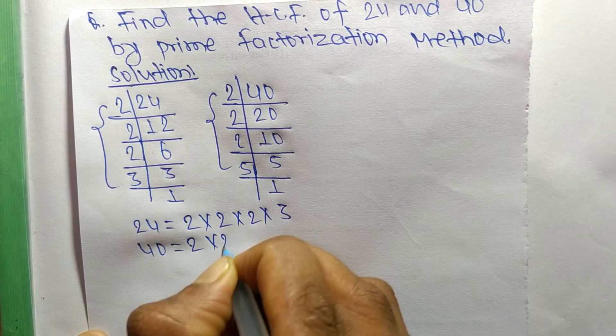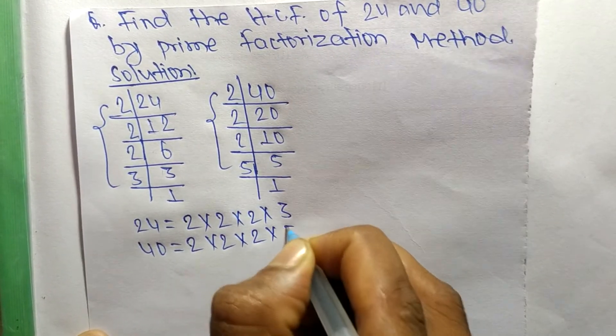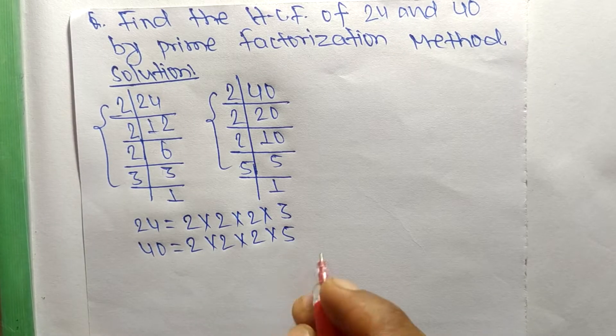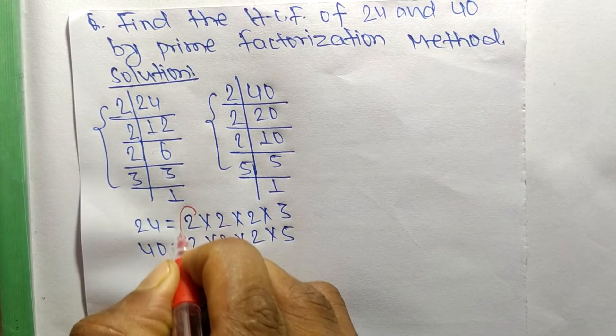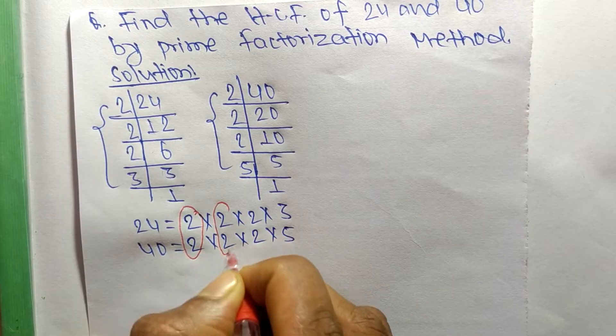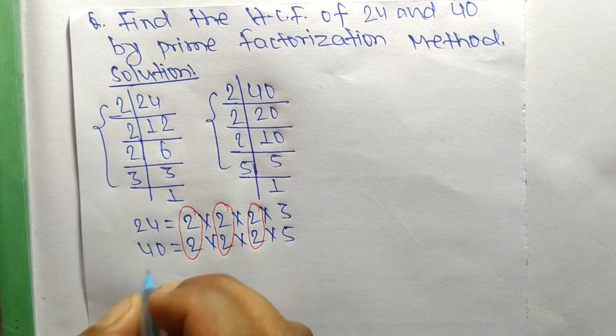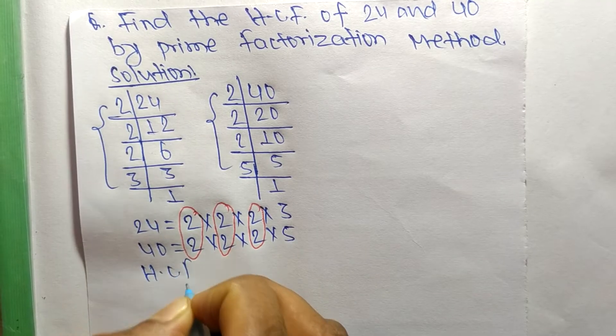Now we find out the common factors in these prime factors. The first common factor is 2, second one is 2, third one is also 2. So the HCF is the product of all these common factors.